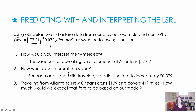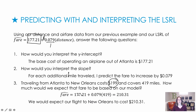Traveling from Atlanta to New Orleans costs $199 and covers 419 miles. How much would we expect the fare to be based on our model? We replace distance with 419 in our formula, and we get $210.31. We would expect our flight to New Orleans to cost $210.31 — so the actual fare is a little cheaper than what our model would predict.